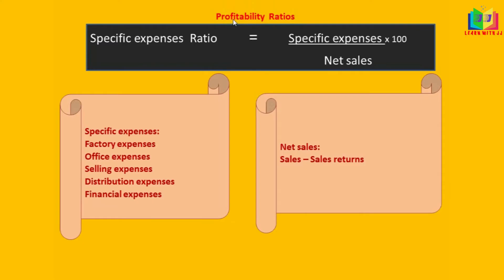The first one is specific expenses ratio — a particular expense and its relationship with net sales. The specific expenses may be factory expenses, office expenses, selling and distribution expenses, or financial expenses. Whatever expenses ratio is asked in the problem, that expense we have to use in this formula. So: specific expenses divided by net sales, multiplied by 100. Here net sales is nothing but sales minus sales returns.